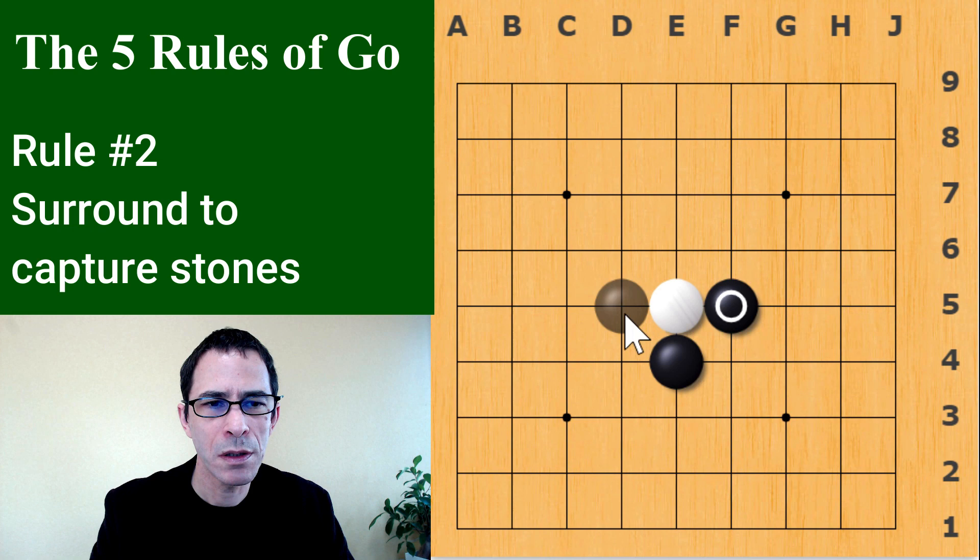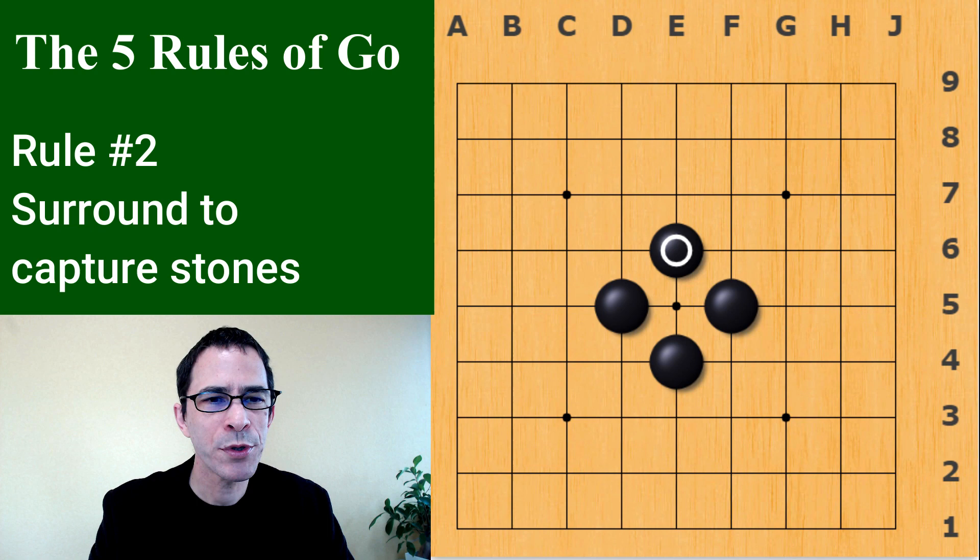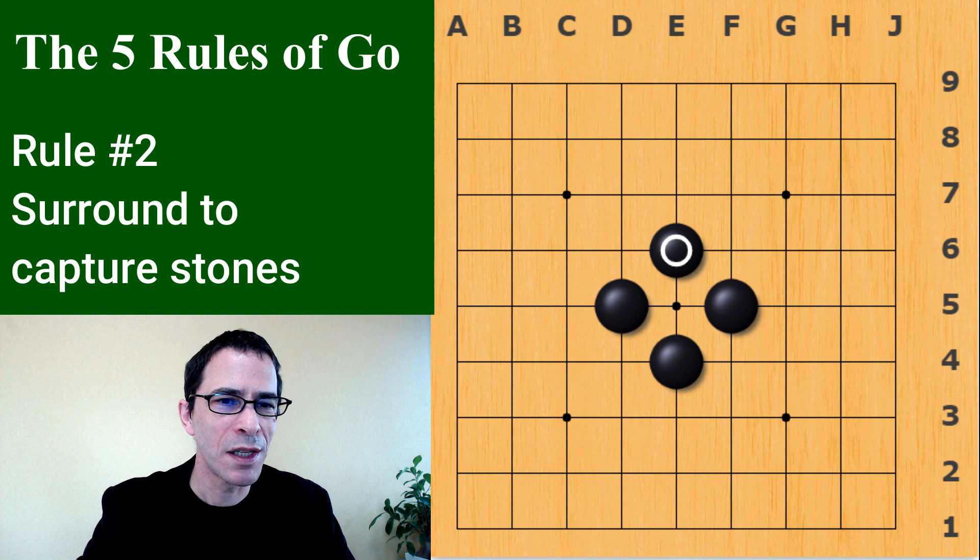Playing on this point, this point, this point, and finally this point would capture the white stone. When you capture a white stone, you take it off the board and keep it to the end of the game. If you're learning on a computer program or on the internet, the application will do everything for you, so you don't have to worry about that.